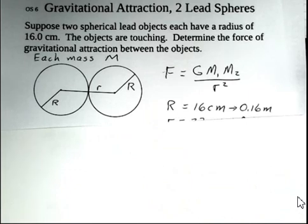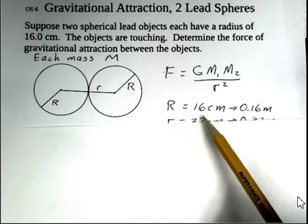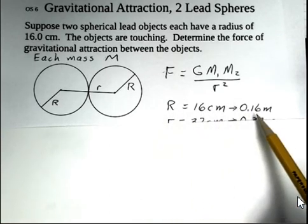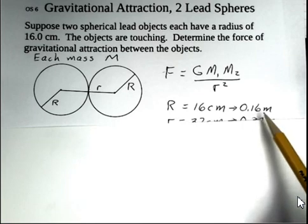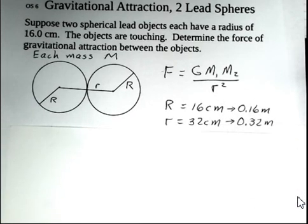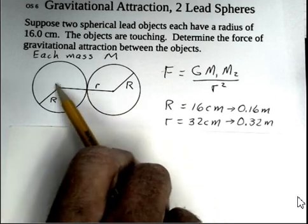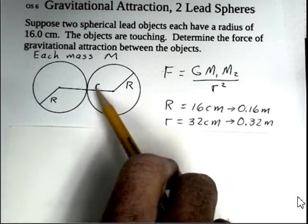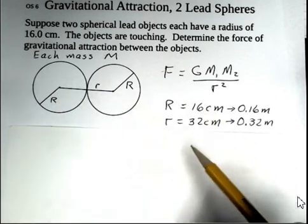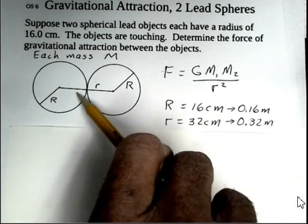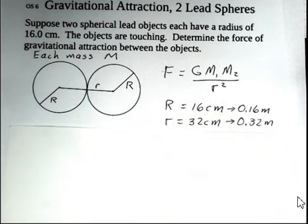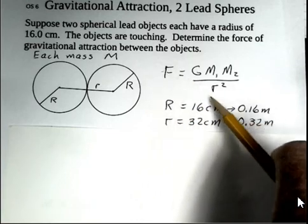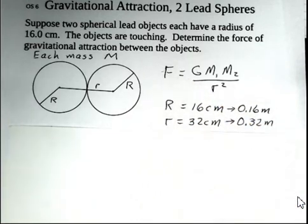So our radius of one sphere is 16 centimeters. We'll work in meters, standard metric unit of distance, so 0.16 meters. That means our small r here in this diagram, from center to center, is 32 centimeters. There's capital R plus capital R, or 0.32 meters. So we're on our way to finding the force. We've discovered what the small r number is.